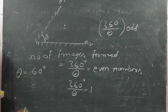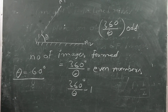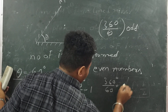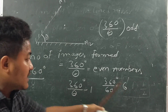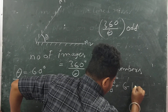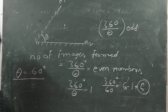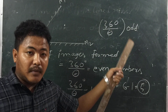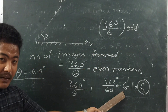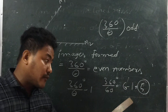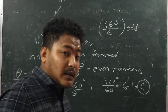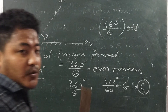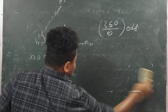For example, if theta is 60 degrees, then 360 divided by 60 equals 6. Since 6 is an even number, the number of images formed would be 6 minus 1, which is 5. So for even results, subtract one from the result to find the number of images formed with two inclined mirrors.